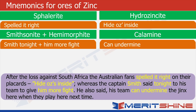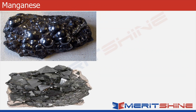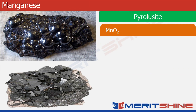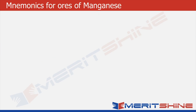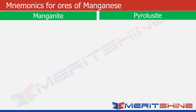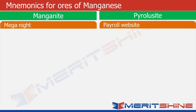Let us now move to the ores of manganese. Pyrolusite is an oxide of manganese and manganite is the hydroxide of manganese oxide. Let us fill our green boxes and then our orange boxes. For manganite what comes to mind is mega night, and for pyrolusite what comes to mind is payroll website.